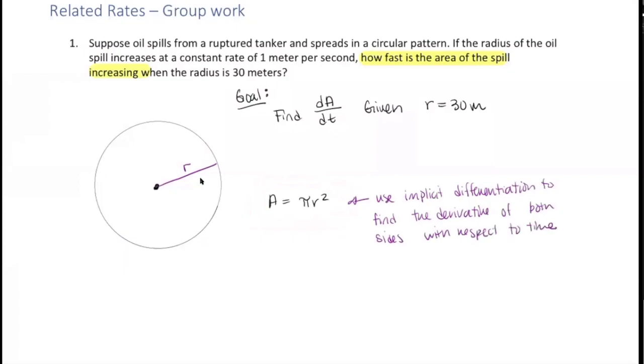So we're finding the derivative with respect to time on both sides. We have dA/dt is equal to π, which is a constant. The derivative of R squared is 2R, and then we have to multiply by dR/dt. So wonderful.